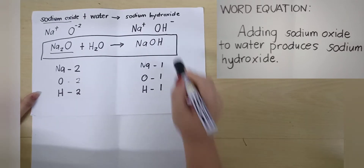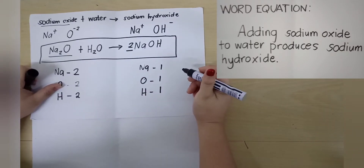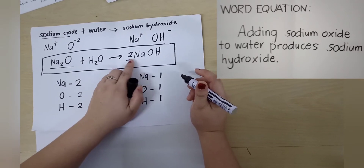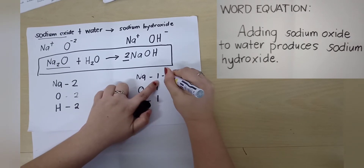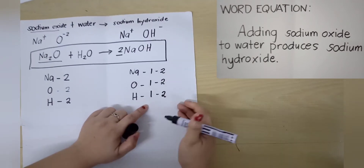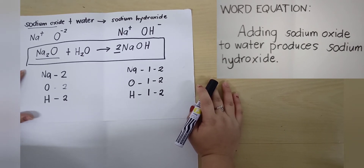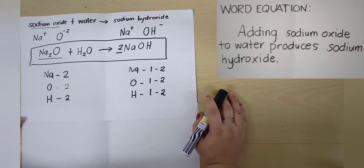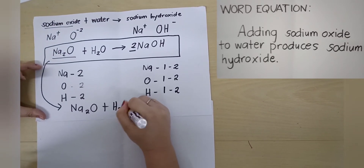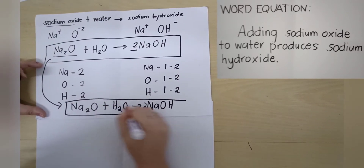We have to put a coefficient on the compound with an unequal number of atoms, and that is NaOH. The first coefficient we're going to try is 2. This coefficient will be distributed to the number of atoms of each element in the compound: 2 times 1 for Na gives us 2; 2 times 1 for oxygen gives us 2; and 2 times 1 for hydrogen gives us 2. Looking at our chemical equation, we now have the same number of atoms for both the reactant and the product, so we rewrite this as the balanced chemical equation.